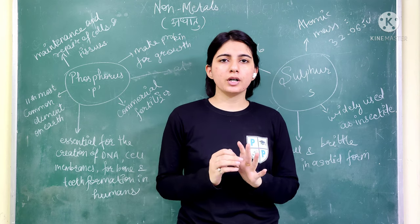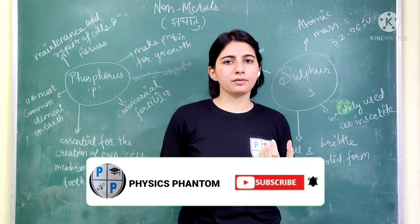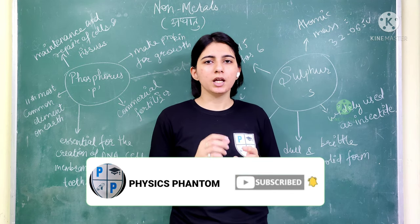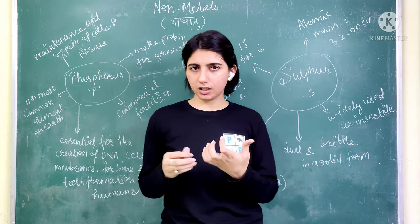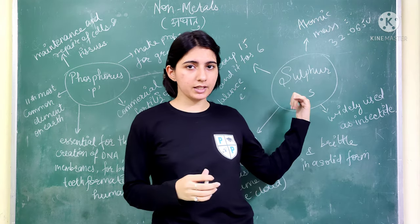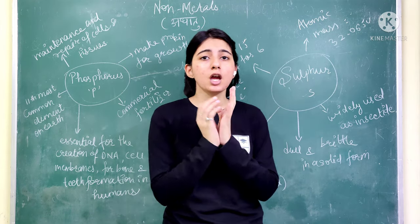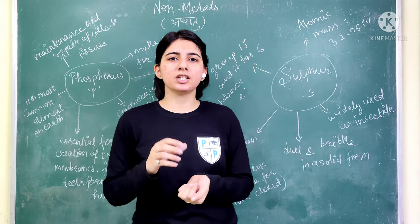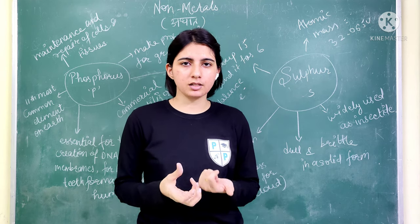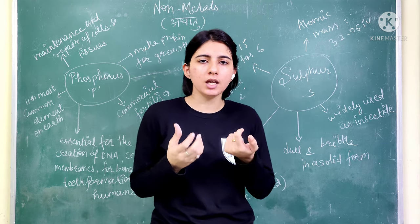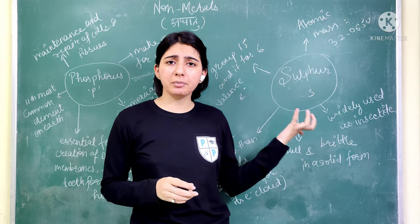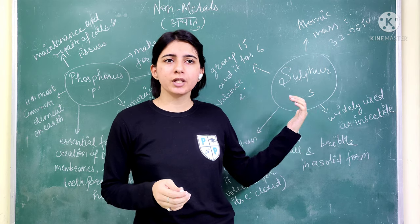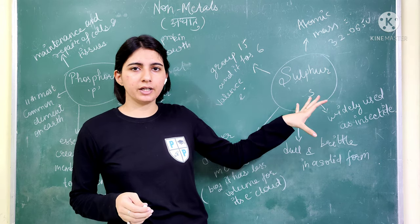The first non-metal is sulfur, symbol S, atomic number 16. Sulfur is abundant, meaning it exists in nature in large amounts. It is multivalent and it is a non-metallic element.